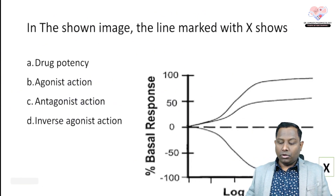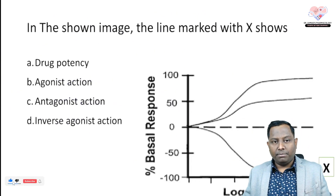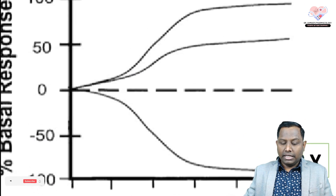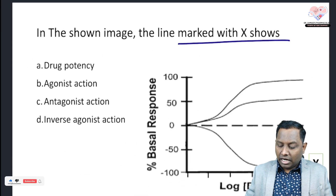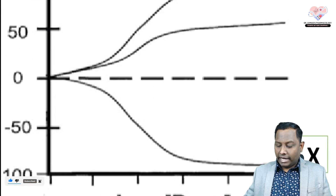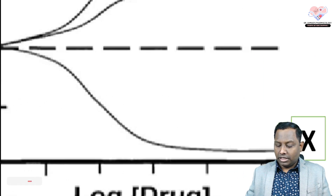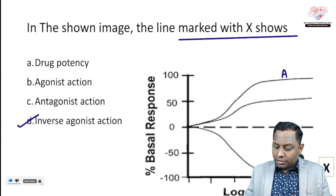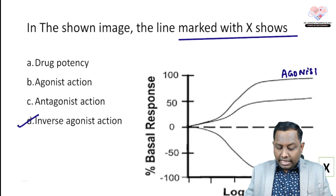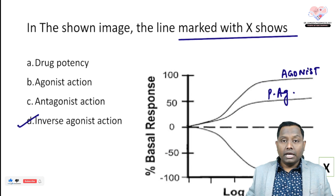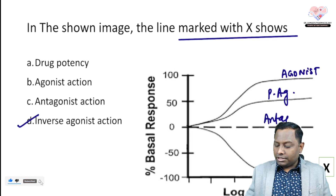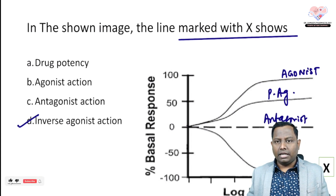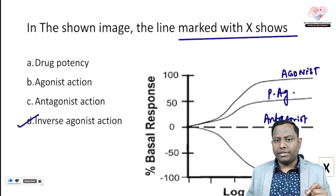The third question shows an image and asks to identify the drug marked X. Looking at the graph, X is at the bottom — that is the inverse agonist. From top to bottom: agonist, partial agonist, antagonist, and inverse agonist. This concept has been explained in detail in a previous episode around episodes 24-25.